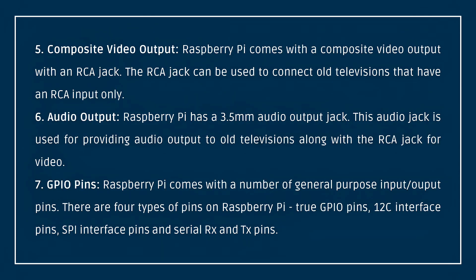Then, Composite Video Output. Raspberry Pi comes with a Composite Video Output with an RCA jack. You can use the RCA jack for old devices. Then, Raspberry Pi comes with general-purpose input-output pins. There are four types of pins: true GPIO pins, I2C interface pins, SPI interface pins, and Serial RX and TX pins.